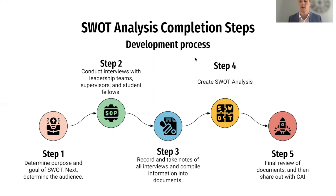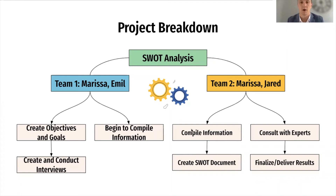After that, we did our final review of the documents. We met with many experts in the field, had them review, edit, and help with formatting, and then the next step was to share it out with the CAI. On team one, Marissa Reed and Emile Dantzler kicked off the project by creating the objectives and goals, conducting the interviews, and compiling the information. Then Marissa and I took over, compiled all the information, finalized it, started creating the SWOT document, consulted with experts, and learned how to most efficiently display the information. We then finalized and delivered the results program-wide throughout the CAI.